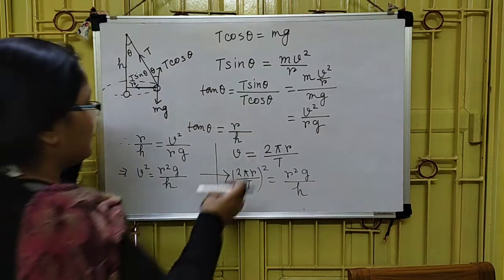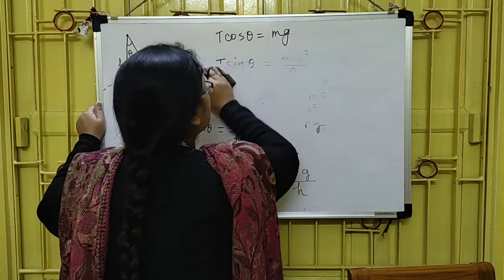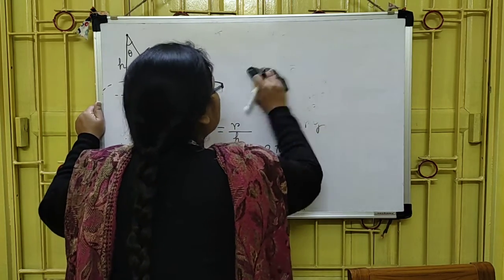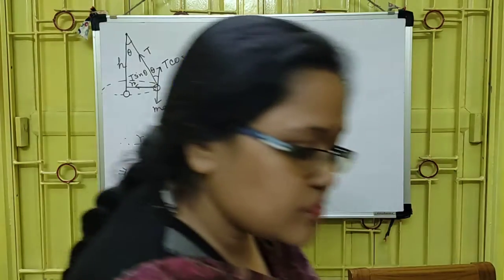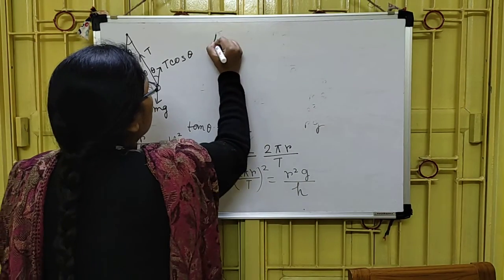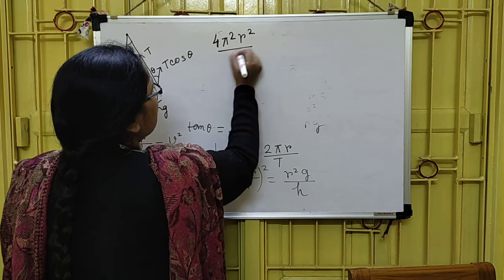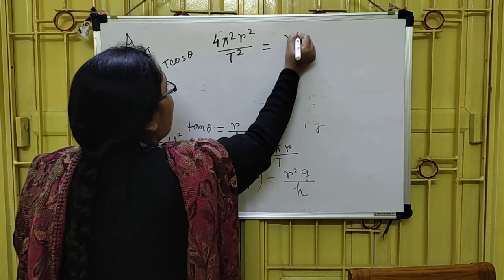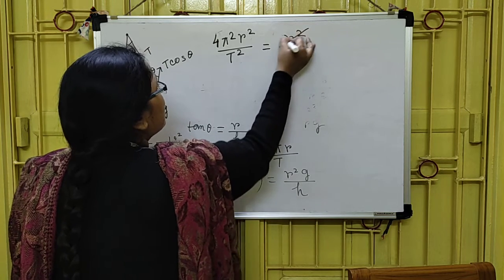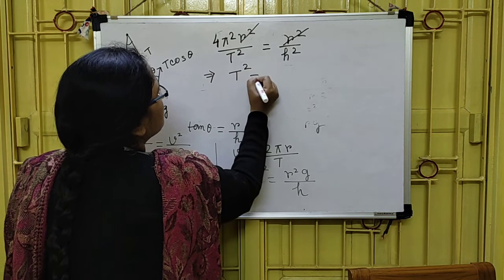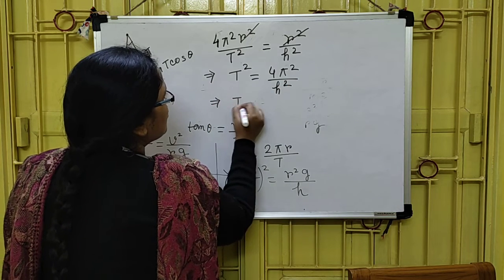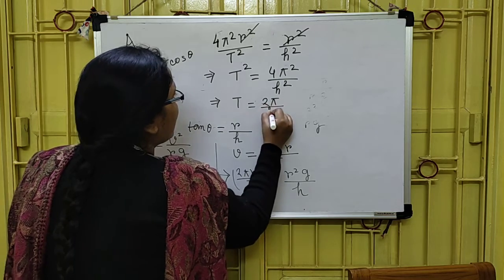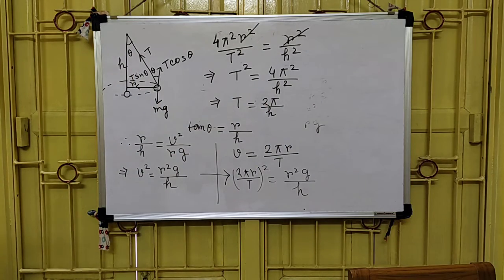From that equation: 4π²R² / T² = R²g / H. The R² cancels on both sides, giving T² = 4π²H / g, and therefore T = 2π√(H / g).